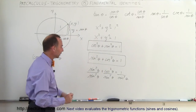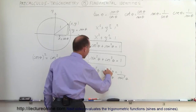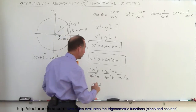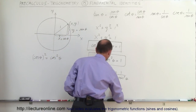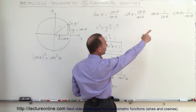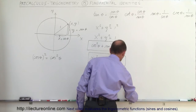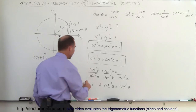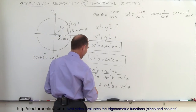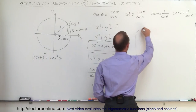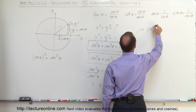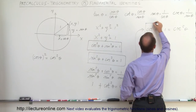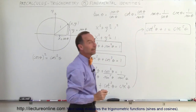Dividing through, the first term becomes 1. The cosine squared divided by sine squared is cotangent squared of theta. And 1 over the sine squared is cosecant squared of theta. Rearranging, we can write this as cotangent squared theta plus 1 equals cosecant squared theta, and that is our second basic identity in trigonometry.